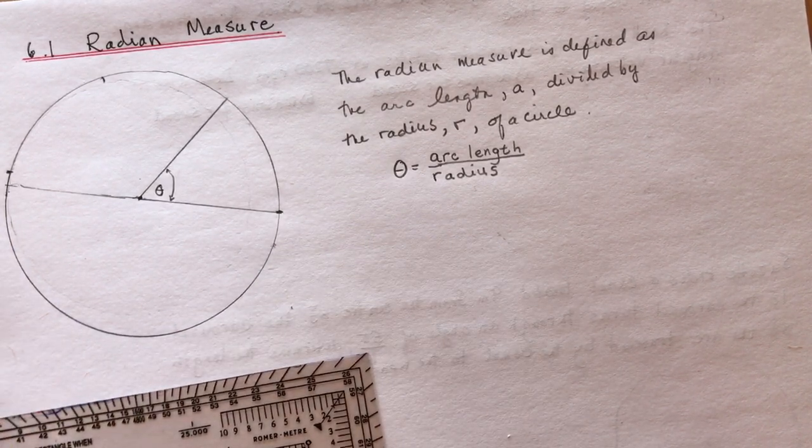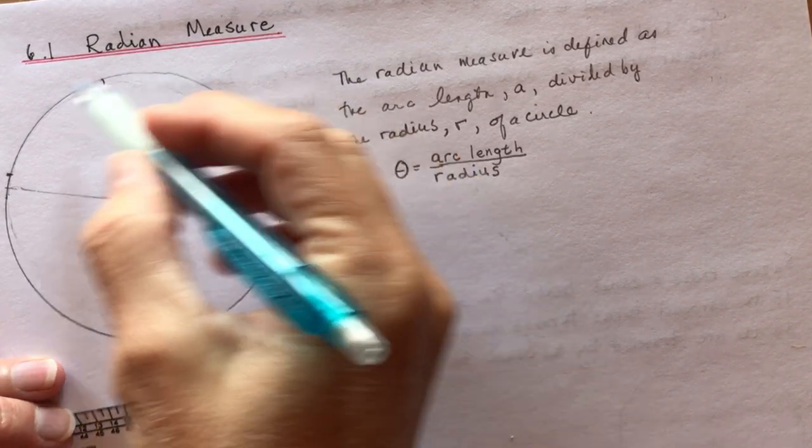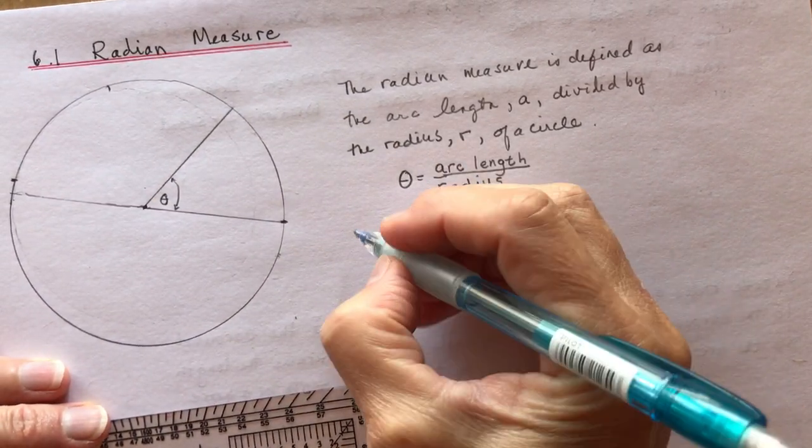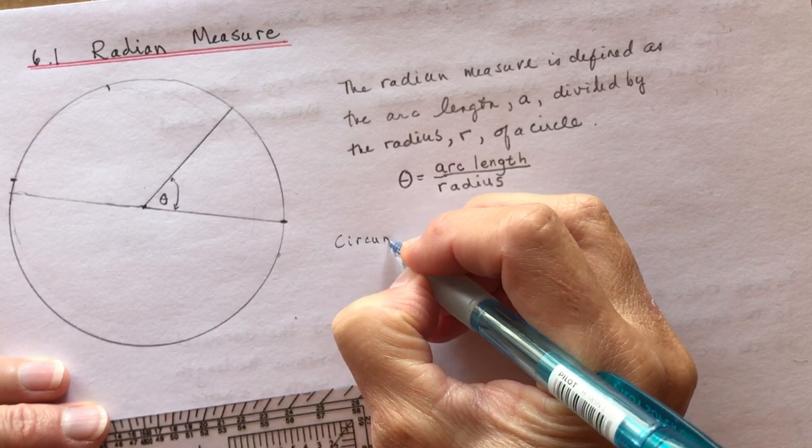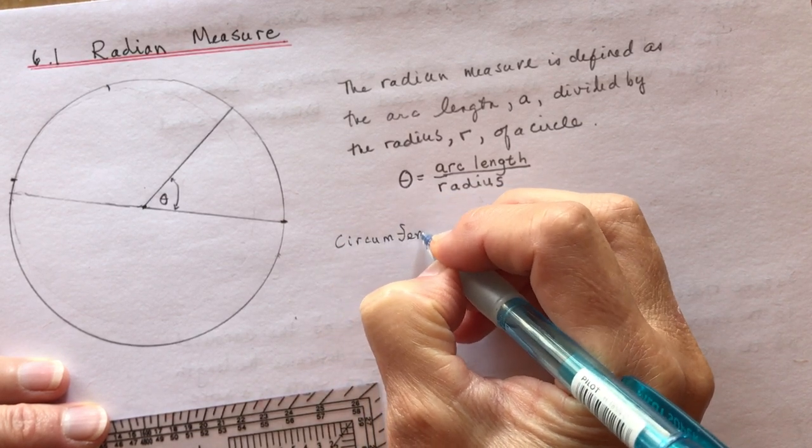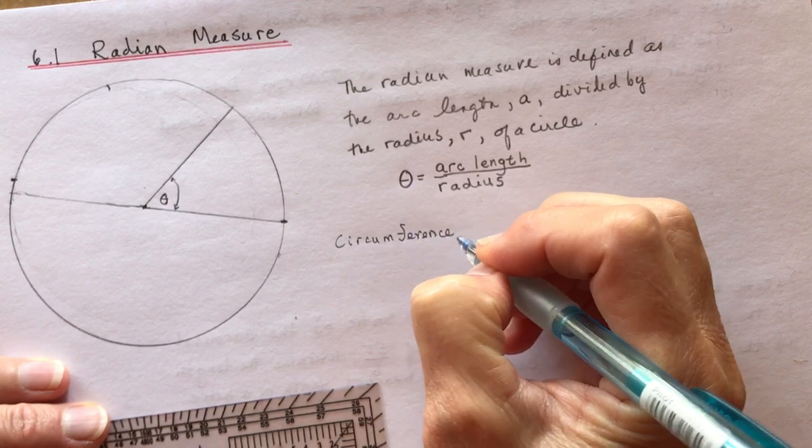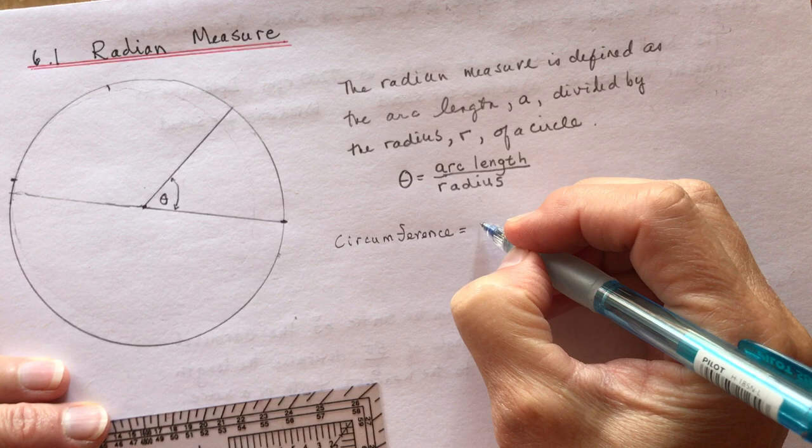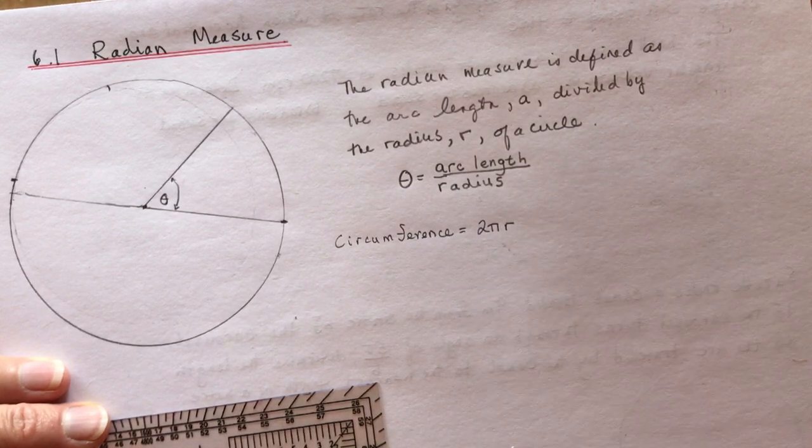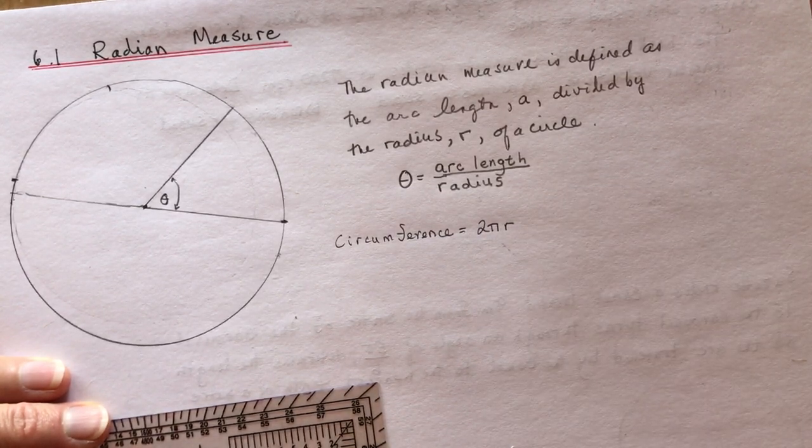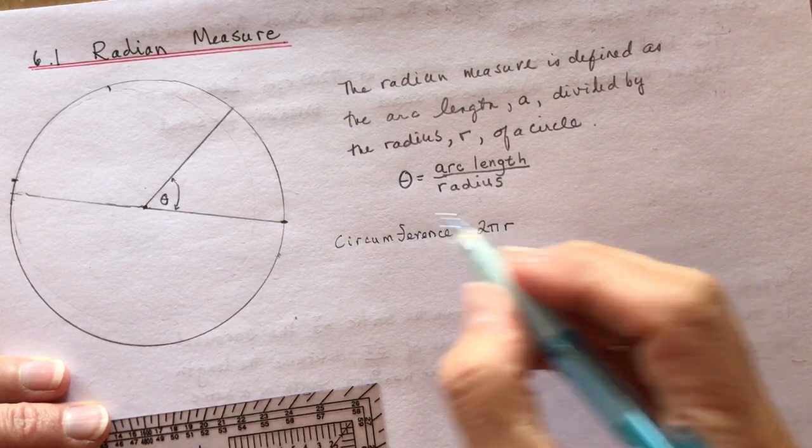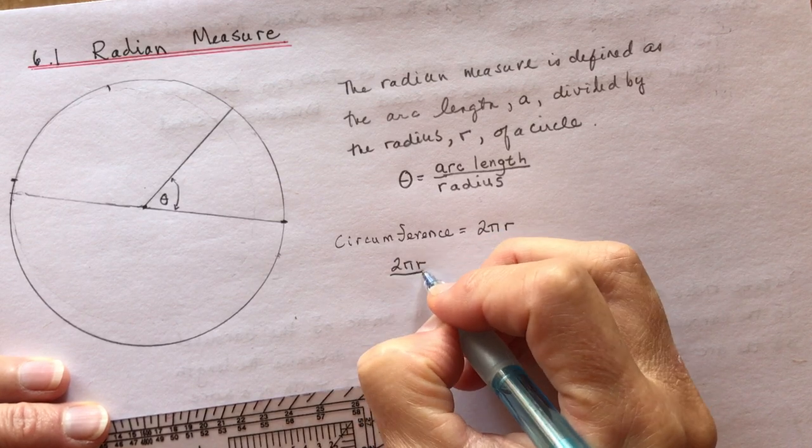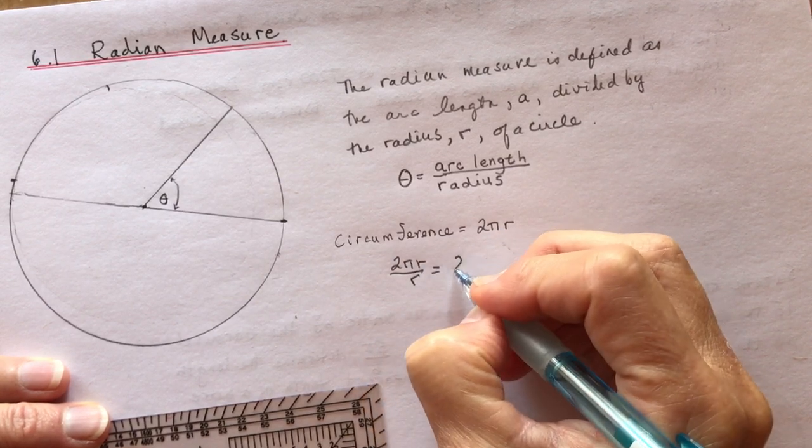Let's think of something that you do know. You know the circumference of a circle, right? And I'll get people that say pi r squared, that's area. Anytime you're squaring something, that's area. Circumference is 2πr. So if I take the circumference of the circle and divide it by r, which is my radius, 2πr divided by r gives me 2π.